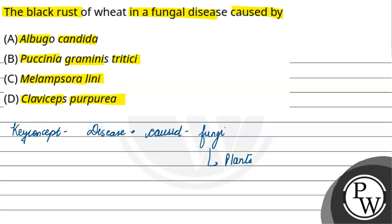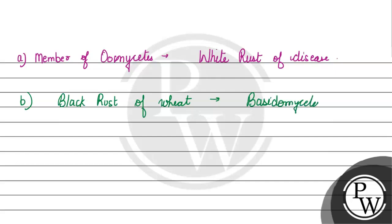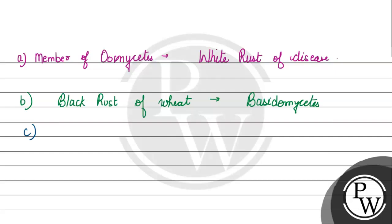Next, we have Puccinia. Puccinia causes black rust of wheat. It belongs to the group Basidiomycetes — it belongs to the Basidiomycetes. Next, our option is Melampsora lini, which we commonly call flax rust.